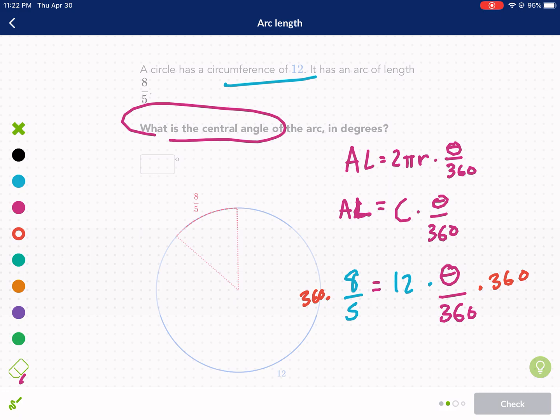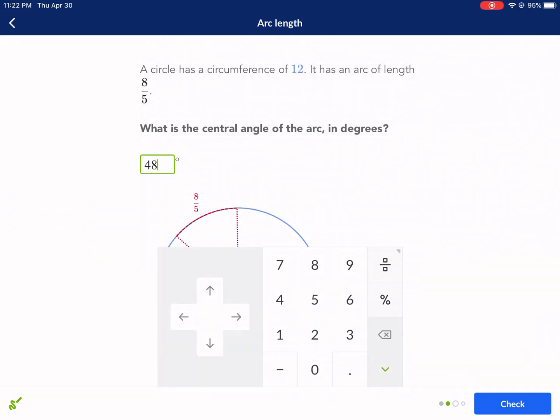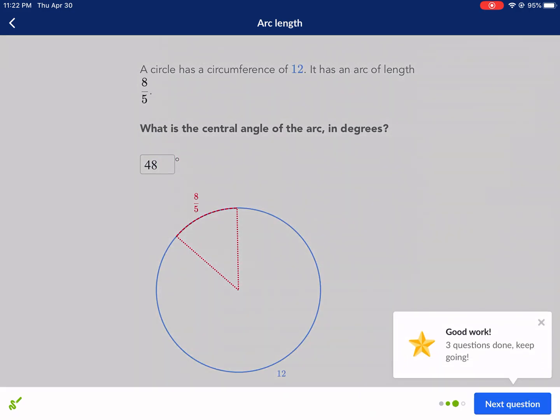Once I do that, I get 576 on the left side of the equation, and I get 12 times theta on the right. So now I'm just going to do 576 divided by 12. Once I do that, I get theta equals 48. So even though we're not solving for the arc length, we can use what we know of the arc length formula to solve for a missing angle in this case. So we're going to type in 48. And there we go.